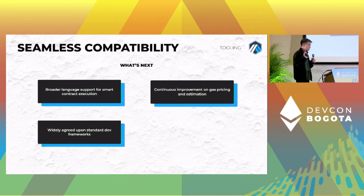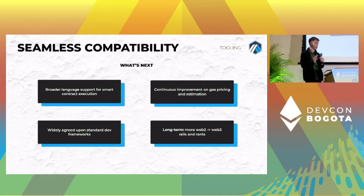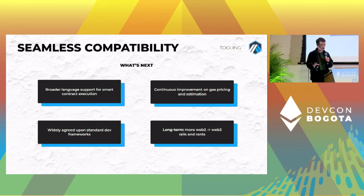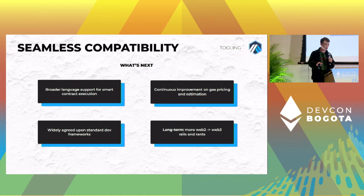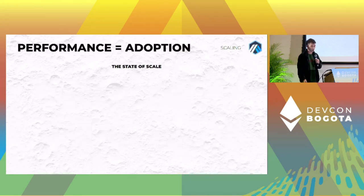As more developers come into the space, longer term we need better rails for Web2 developers with canonical paths forward for any kind of application, and community consensus around the best tooling to use. The last point here is there's a huge perception issue in major tech. I came from that industry. People are not super enthused about crypto development, and we need to do something about that.